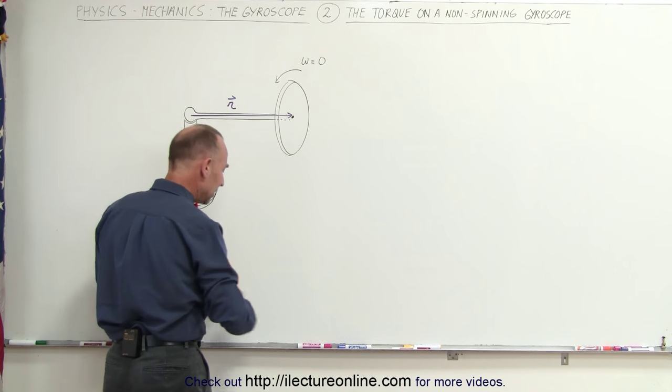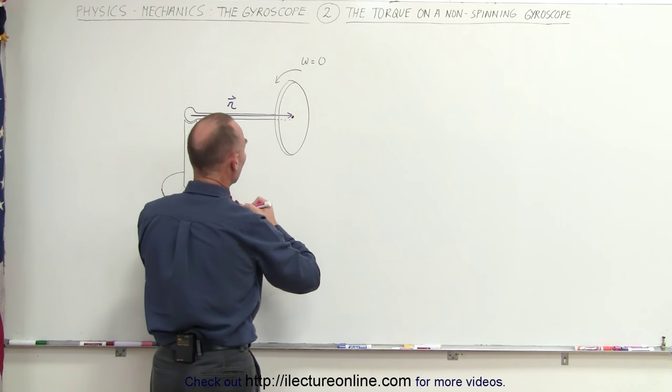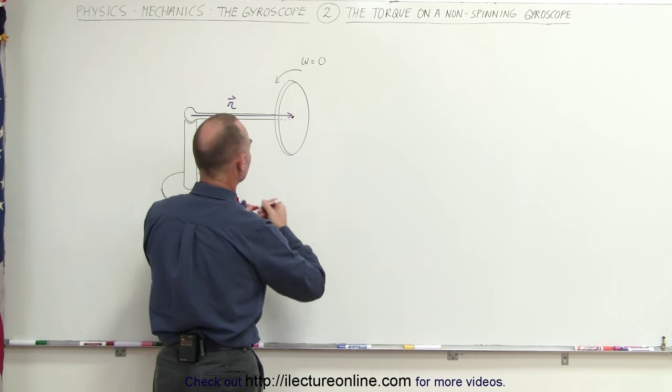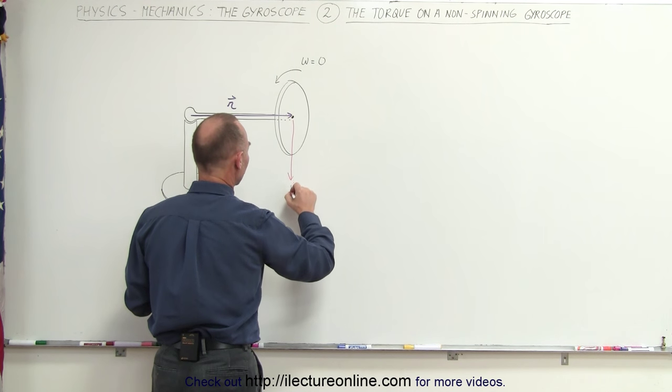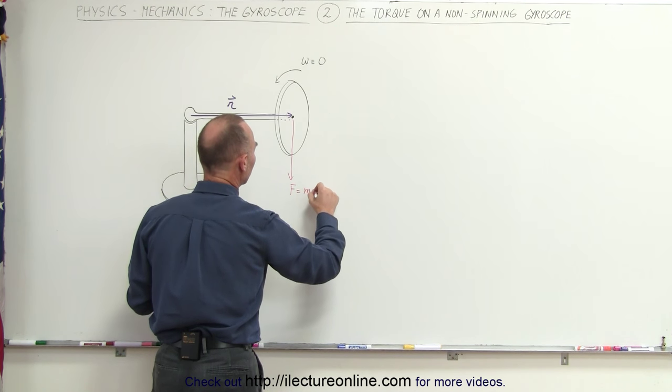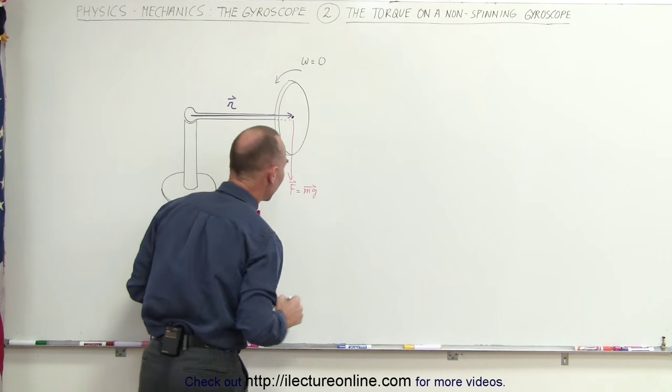The weight of the gyroscope is acting downward. Let me use a red pen here. The weight is acting downward from the center of mass. This would be the force which is equal to mg, and that of course is a vector.